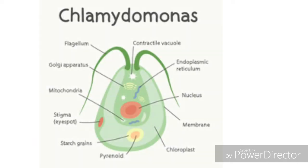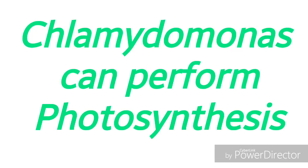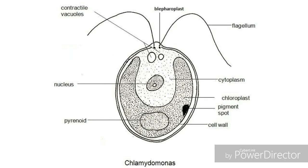Chlamydomonas belongs to a group of microscopic organisms called algae, so it is a microscopic algal form. Algae are photosynthetic organisms. Chlamydomonas contains hair-like structures called flagella which are useful for movement in water. Chlamydomonas is autotrophic — it can prepare its own food by performing photosynthesis using its chloroplast and chlorophyll pigment.